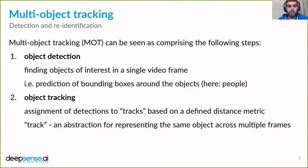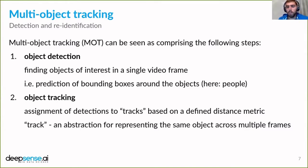Let me define the problem of multi-object tracking, often abbreviated as MOT. It comprises two steps: first, object detection — finding objects of interest in a single video frame, predicting their position, and drawing bounding boxes around them. In our case the objects were people, though in general objects can be of any kind. Once we have detections for a given frame, we assign them to tracks — abstract representations of the same object across multiple video frames — based on a defined distance metric.